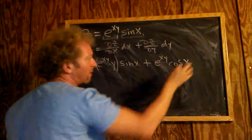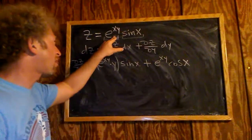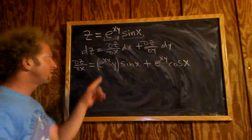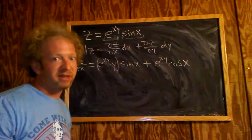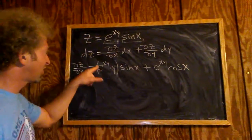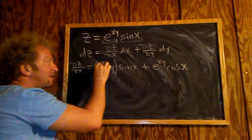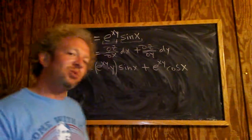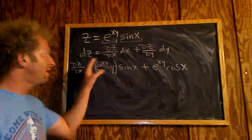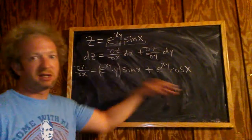Let me go over that again. We're taking the derivative of this function with respect to x. We have a product of two functions and they both have x's in them, so we use the product rule. The derivative of e to the xy uses the chain rule: it's e to the xy times the derivative of the inside. The inside is xy and the derivative of x is 1, so we get y. That gives us the derivative of the first times the second, plus the first times the derivative of the second.